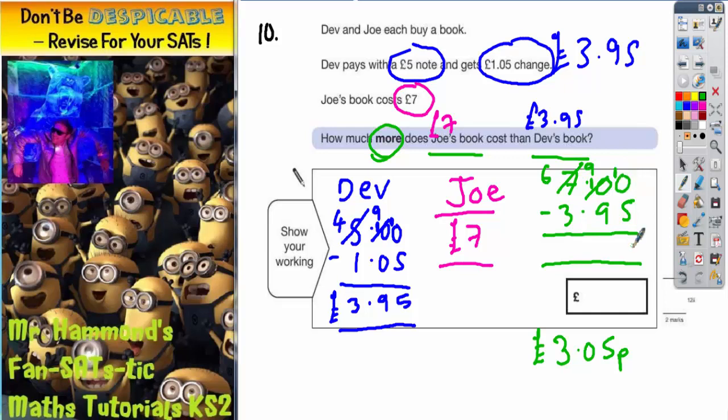Ten take away five is five. Nine take away nine is zero. Six take away three is three. Don't forget to put your decimal point in and your pound sign. So the final answer is indeed £3.05.